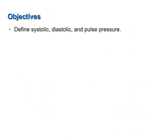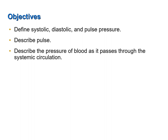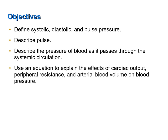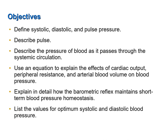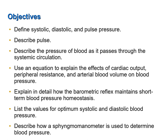Now let's review the objectives of the screencast: define systolic, diastolic, and pulse pressure; describe pulse; describe the pressure of blood as it passes through the systemic circulation; use an equation to explain the effects of cardiac output, peripheral resistance, and arterial blood volume on blood pressure; explain in detail how the baroreceptor reflex maintains short-term blood pressure homeostasis; list the values for optimum systolic and diastolic blood pressure; and describe how a sphygmomanometer is used to determine blood pressure.